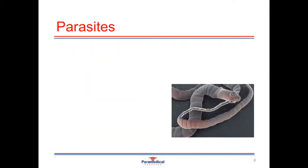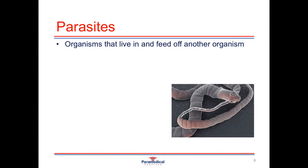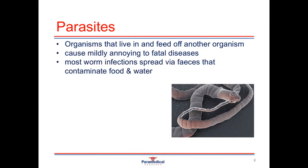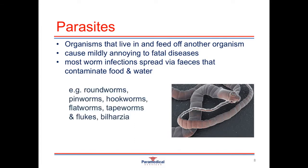Parasites need to live and feed off other organisms and don't survive independently for long. They can cause mildly annoying to very fatal diseases. Most worm infections are spread via feces that contaminate food and water sources, most commonly seen in developing countries with inadequate clean water and sanitation. Examples of parasites include roundworms, pinworms, hookworms, flatworms, tapeworms, and flukes. Severe infections such as bilharzia can be fatal without treatment.